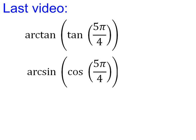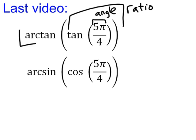Last video, we dealt with some composite functions. In that case, we started with an angle, which got plugged into the tangent function, which gave us a ratio. Then when we took the arctan of that, our final answer brought us back to an angle.